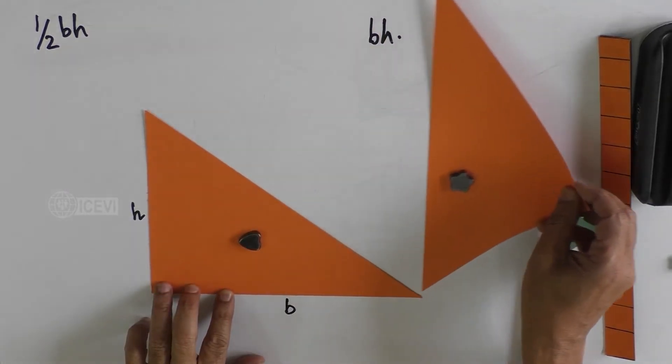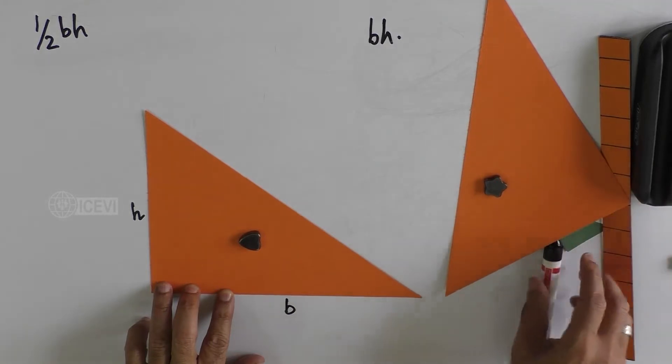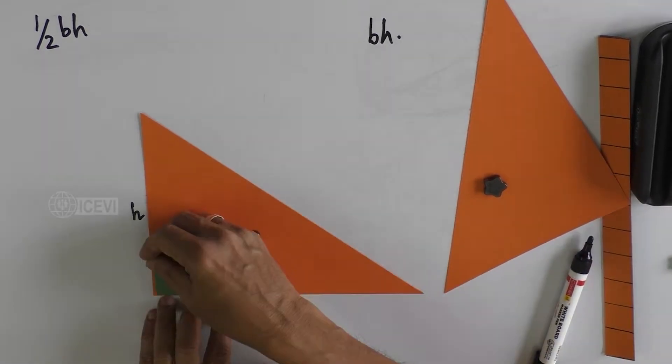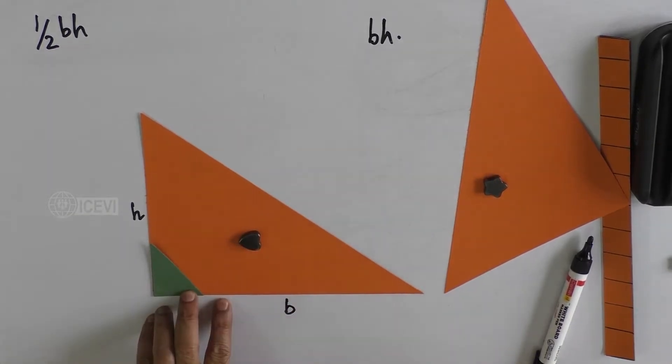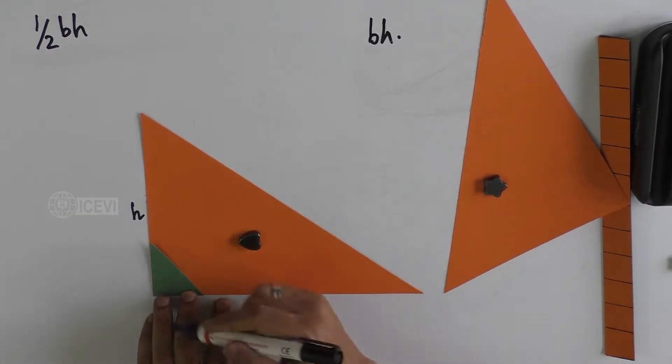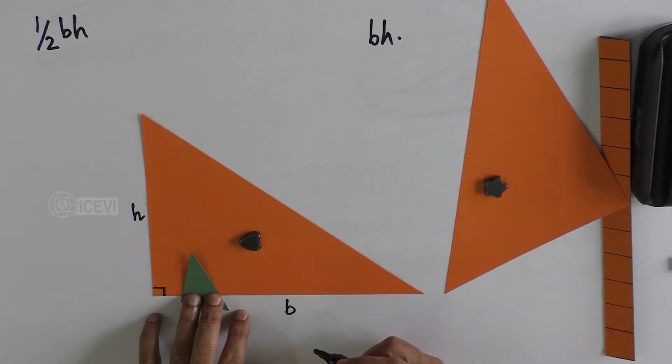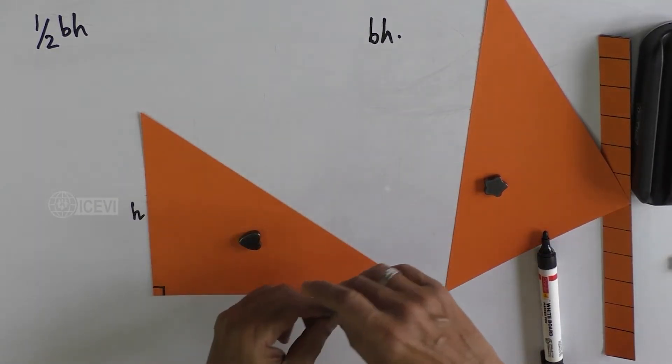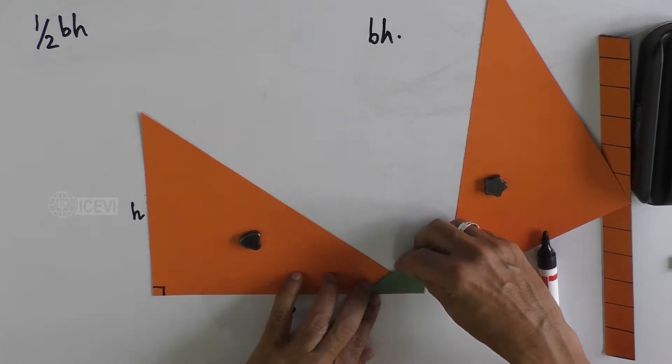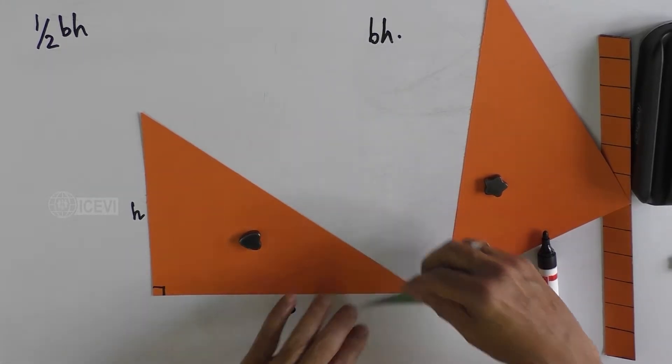The rectangle is made into two triangles. It is a right angle triangle. That means one of the angles of the triangle, if it is 90 degrees, we call that right angle triangle.